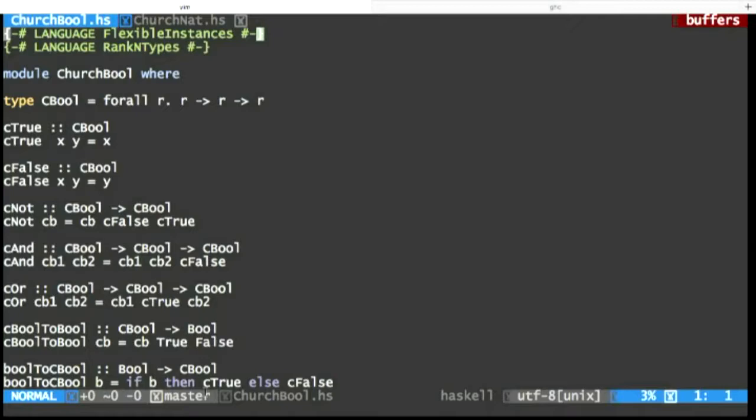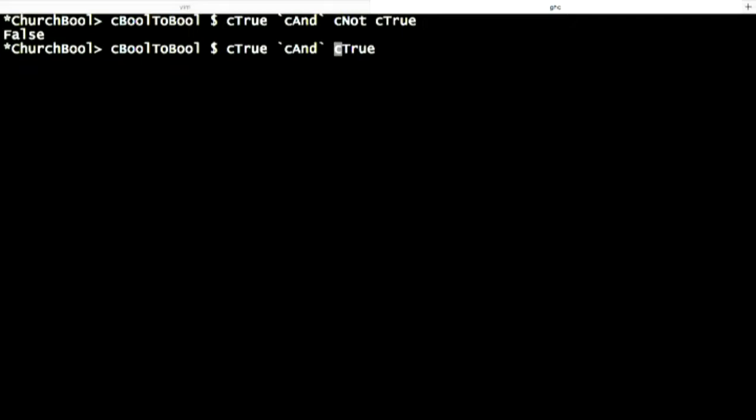So this is a Haskell command line. So here's one I prepared earlier. So if we do that, true and not true is false. True and true is true. So we're doing Boolean logic here. We're building a program out of Booleans. But there's no Booleans. It's all functions all the way down. There's no if-else structure. There's no primitive types. It's all just functions.